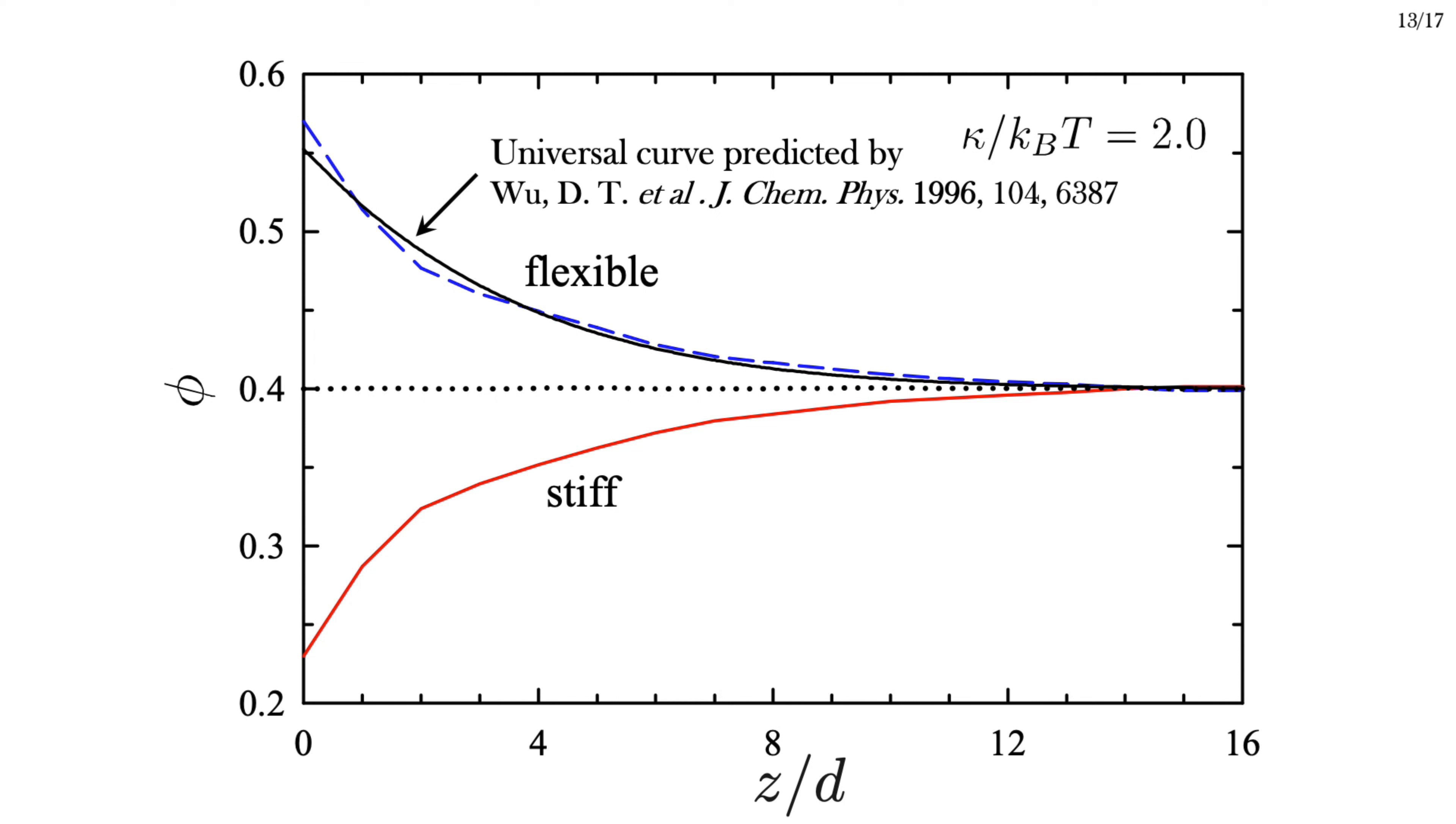Looking once again at the concentration of stiff and flexible polymers next to a wall, we see an excess of flexible polymers. This time the flexible excess extends right up to the wall. As previously noted, the behavior at the very surface is not expected to be universal, but the overall behavior, this excess further from the wall, once again agrees very well with the curve predicted by Wu-Waddell.